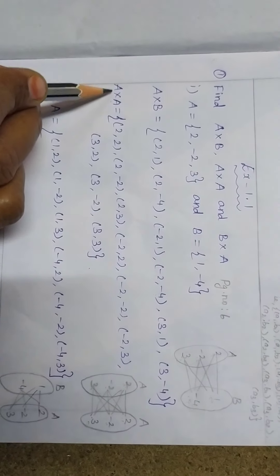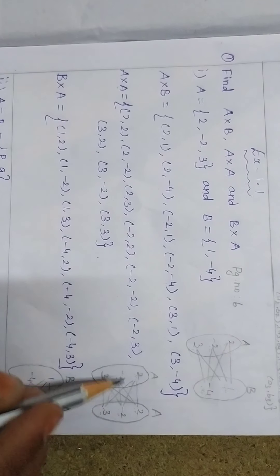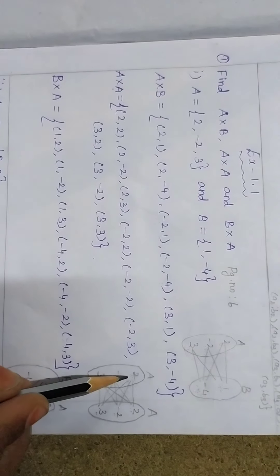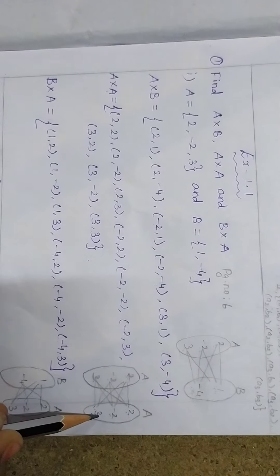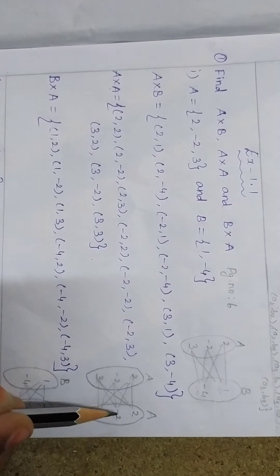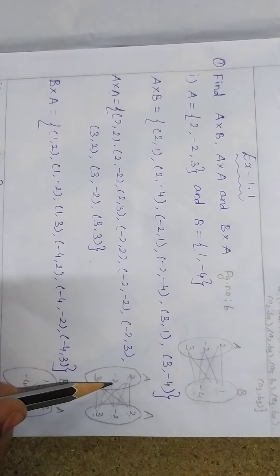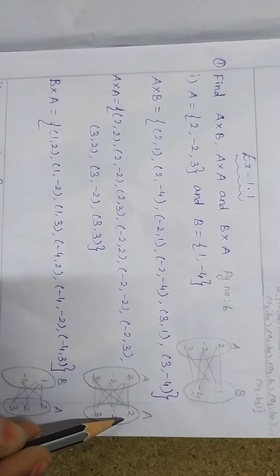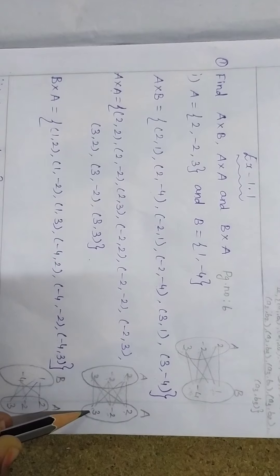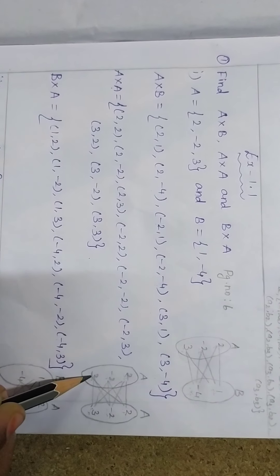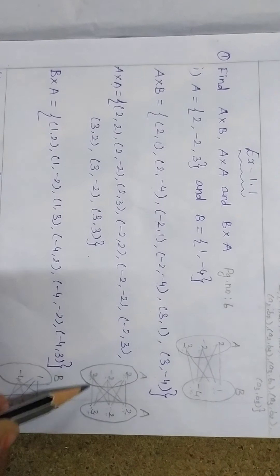Next we have to find A cross A. Here domain and co-domain are both the same set A, which has three elements. The element 2 is paired with all three elements: (2,2), (2,-2), (2,3). The element -2 is paired with all three: (-2,2), (-2,-2), (-2,3). The element 3 is paired with all three: (3,2), (3,-2), (3,3).